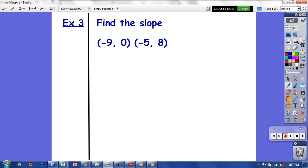Moving on, I have one more example then I have two you-tries for you guys. I'm going to label these x₁, y₁, x₂, y₂, and then we plug those in. So y₂ minus y₁, so 8 minus 0 over x₂ minus x₁, so negative 5 minus negative 9.